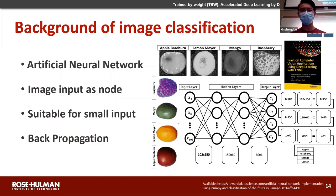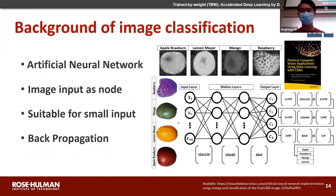A very important process for artificial neural networks is called backpropagation, where we compare the output with the true label. For example, if the true result is apple but the model gives us mango, we backpropagate a correction to the hidden layer parameters. Going back and forth, we try to get the most accurate parameters. However, artificial neural networks are only suitable for small inputs, because as image resolution increases, the network becomes more complex.